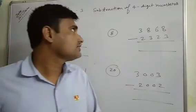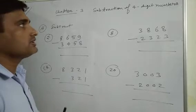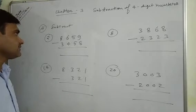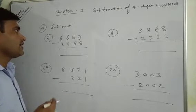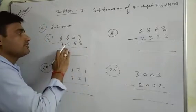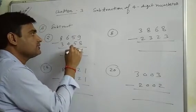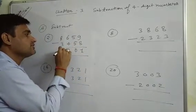Good morning students. Now today we will be reviewing Chapter 3, subtraction of 4-digit numbers. Let's subtract 8659 minus 3458. 9 minus 8 is 1, 5 minus 5 is 0, 6 minus 4 is 2, 8 minus 3 is 5. The answer is 5201.